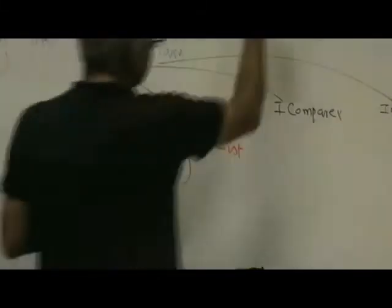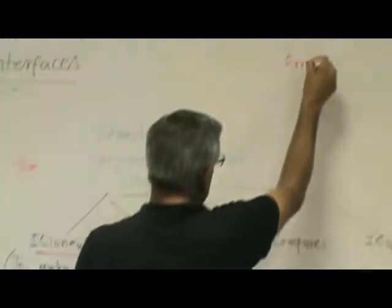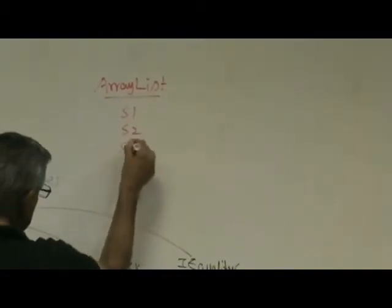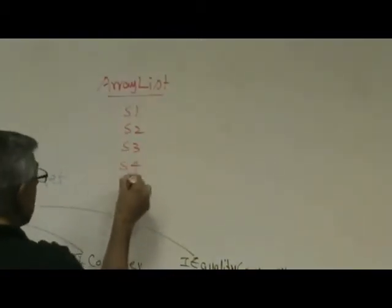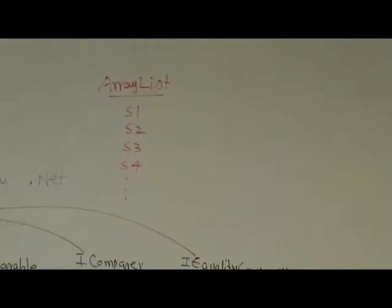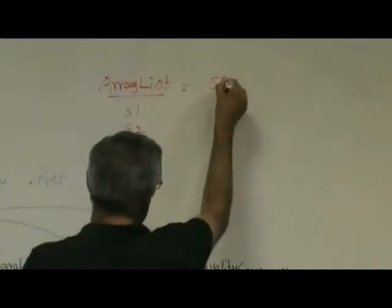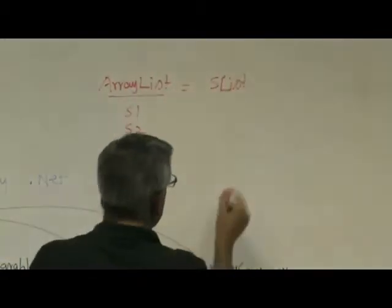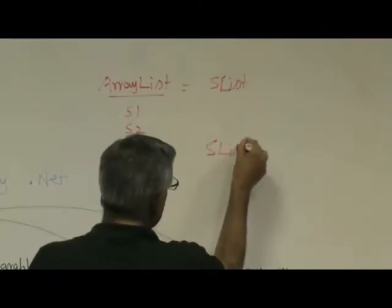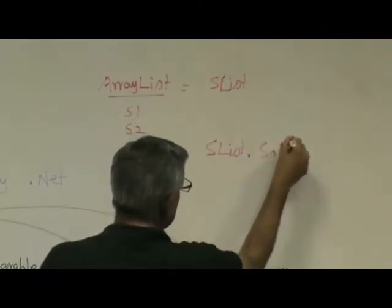So suppose you created an array list, let's pretend, and you put in it a student s1, student s2, student s2, and so on, many students you stored in it, right? Remember by calling the add method, you can put as many things in the array list as an example. So suppose the array list is called slist, okay?